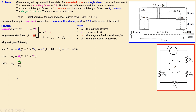To find the unknown flux densities, we use the magnetic flux φ. The magnetic flux circulates around the circuit and is the same for all four elements in series. Once we know φ, we can work out the unknown magnetic flux densities for the core and the gap.